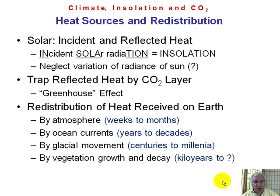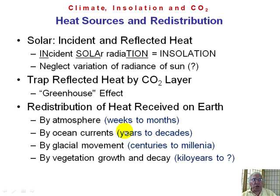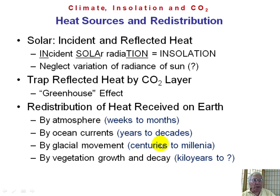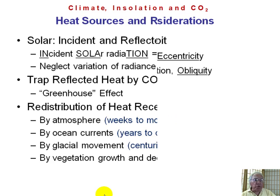The toughest redistribution mechanism to understand is vegetation growth and decay. The time constants for these processes are roughly: the atmosphere redistributes heat in weeks to months, ocean currents take years to possibly decades, glacial movements take centuries perhaps to millennia, and vegetation growth will probably take millennia or longer. We're getting into areas we don't know too much about.